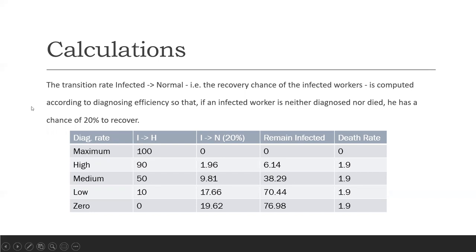Let me explain one part of this. If you set the diagnosing rate to be high, that means 90% of your infected employees will be recognized and hospitalized eventually. The rest of the 10%, out of that 10%, 20%, that means 1.96% will go back to normal stage. Then 6.1% of that particular 10% will stay infected, and 1.9% of that particular remaining 10% will be dying.